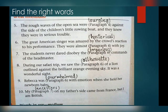Number 8: During our safari trip we saw the silhouette of a lion outlined against the brilliant orange evening sky — it was a wonderful sight. 'Silhouette' means haka. Number 9: Rebecca was overwhelmed with emotion when she held her newborn baby. 'Overwhelmed' means overpowered — bohut zyada jazbat se labreze. Number 10: My ancestors on my father's side came from France, but I am British. 'Ancestors' means purkhay.